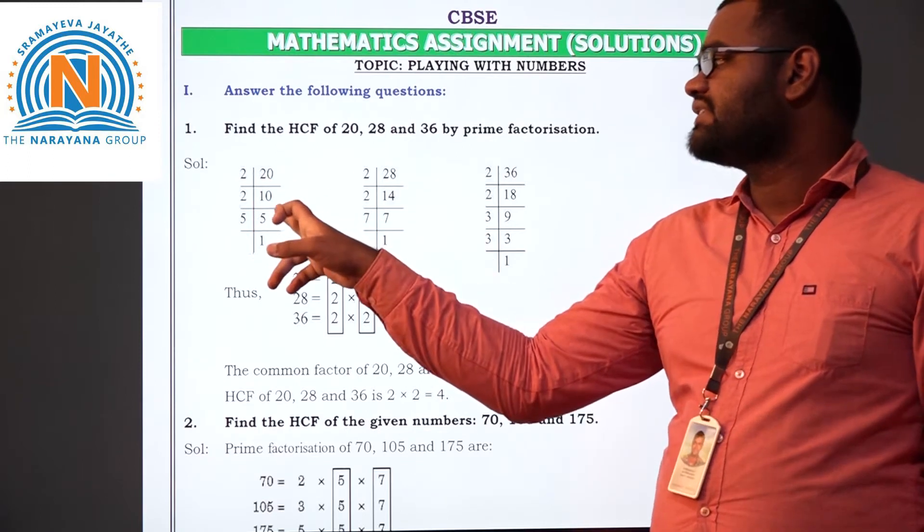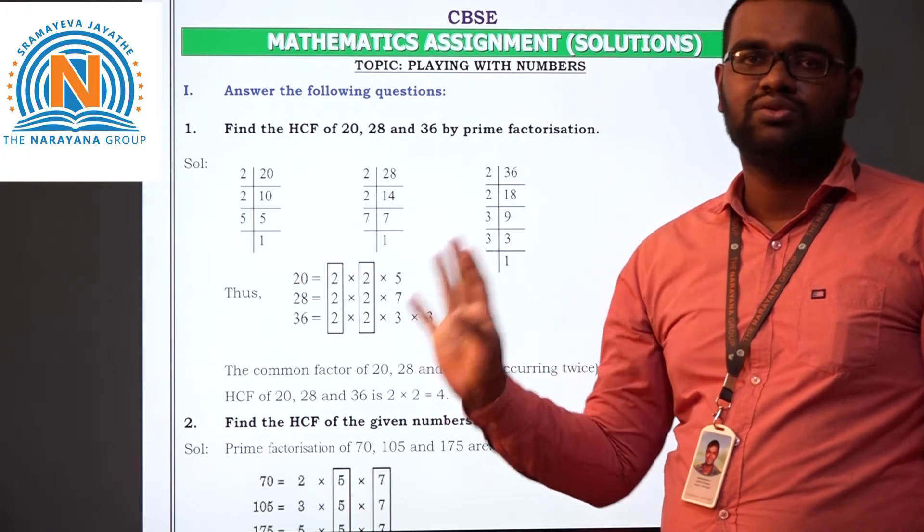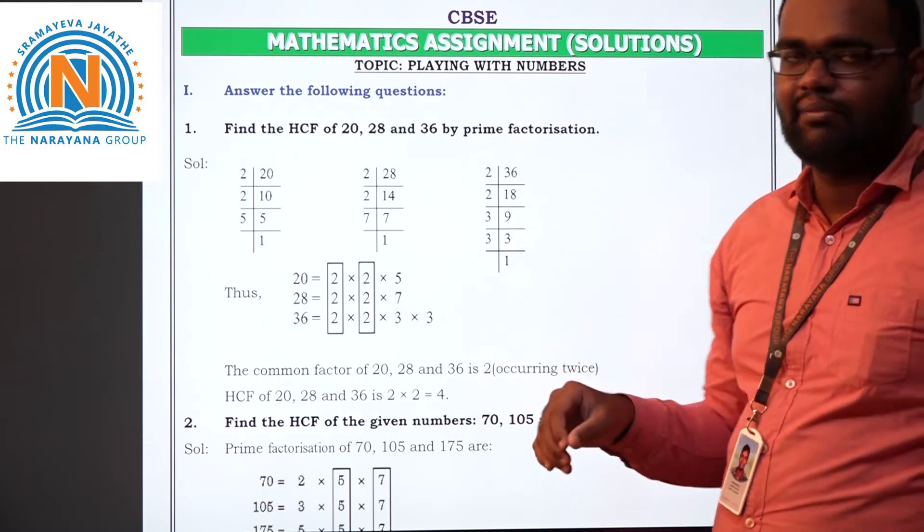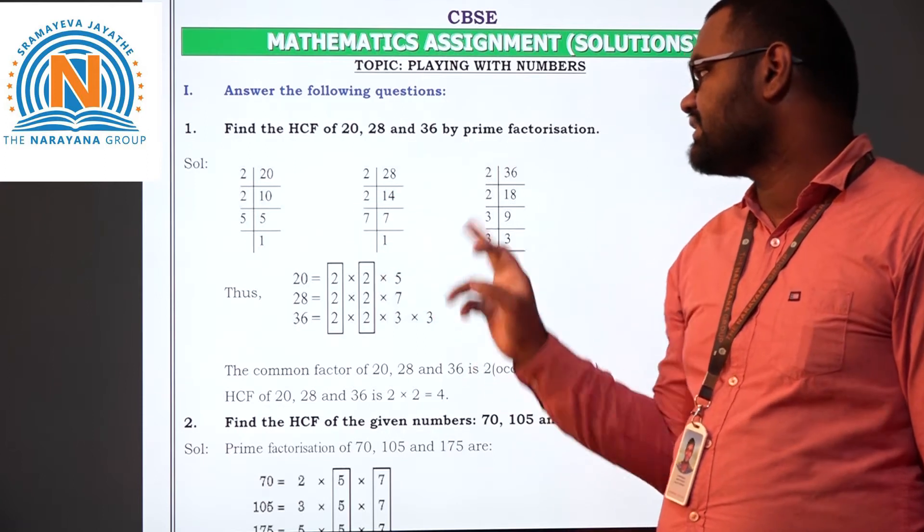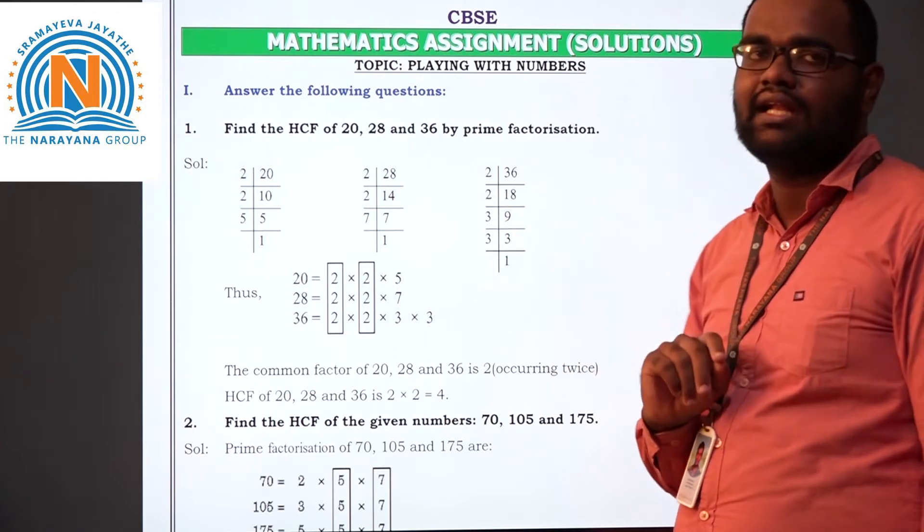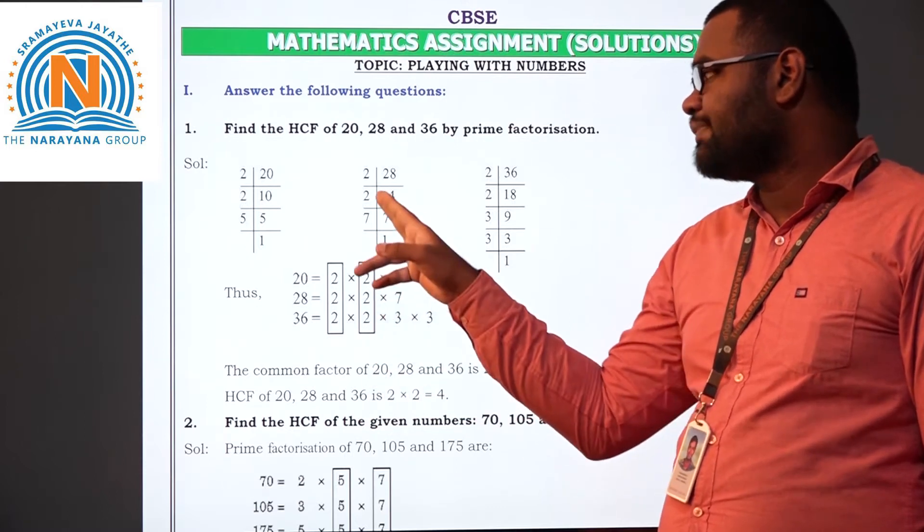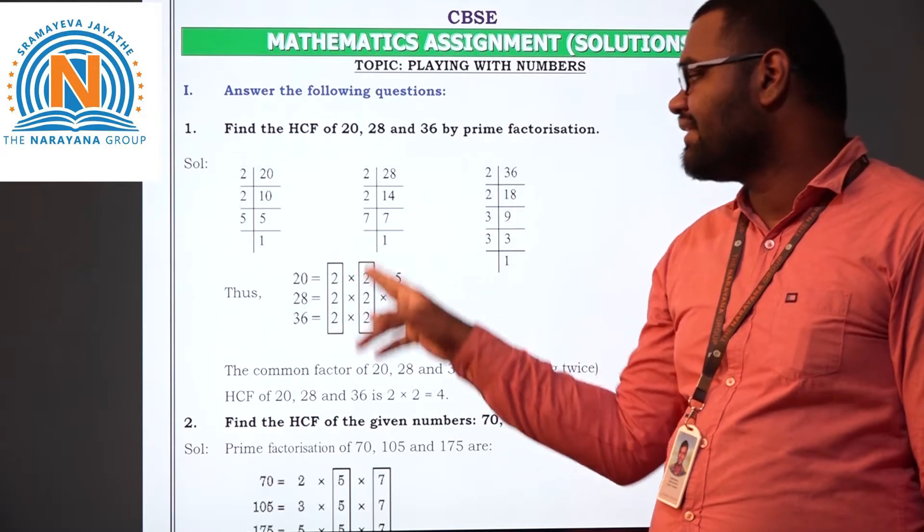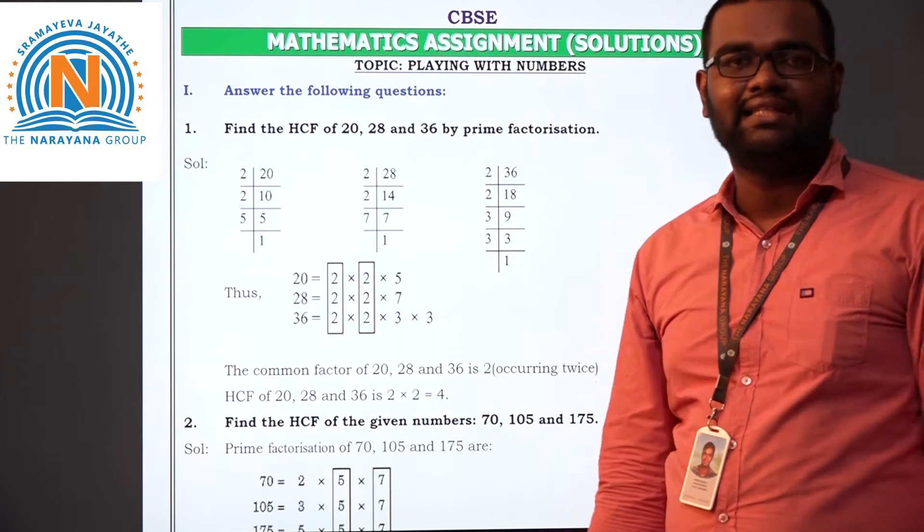For 20, if you take 2 times 10 is 20. 2 is a prime number. Again 2 times 5 is 10. Next prime number 5, so we are going to stop it. Clear students? Only prime numbers from the beginning you have to check each and every number. Again here 2, 2 times 14 is 28. 2 times 7 is 14. 7 times 1 is 7. Similarly 2 times 18 is 36. Again divisible by 2. Next 3 times 3 is 9. Now write all the numbers and take the common alone, which is present in all the 3 given numbers. Which is common: 2 and 2. 2 times 2 is 4. So 4 is the HCF.